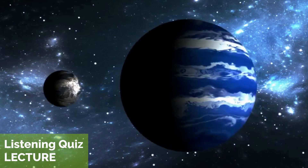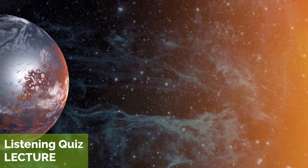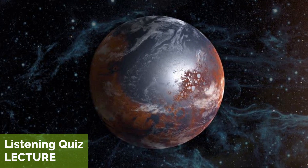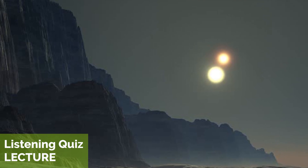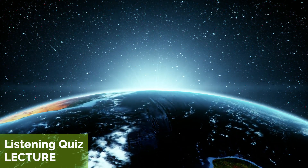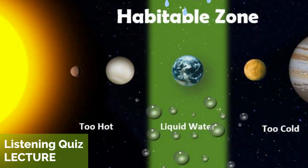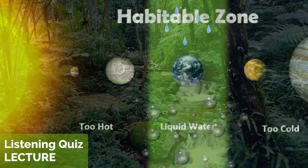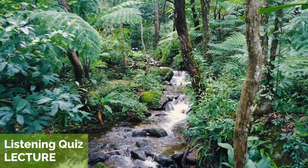These planets come in all shapes and sizes, ranging from gas giants similar to Jupiter, to rocky planets similar to Earth. Some exoplanets have even been discovered orbiting binary stars, or double star systems. One of the most exciting areas of exoplanet research is the search for planets in the habitable zone of their star — the region where temperatures are just right for liquid water to exist on the surface. Liquid water is a key ingredient for life as we know it, so finding planets in this zone is a major goal of exoplanet research.